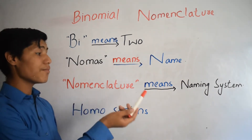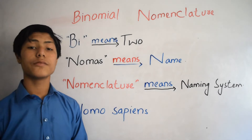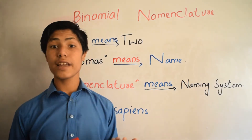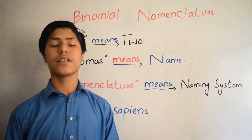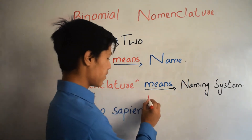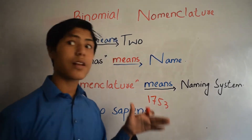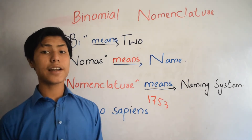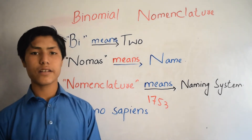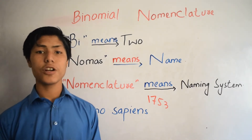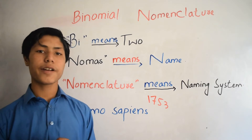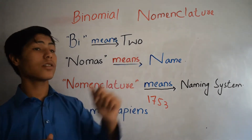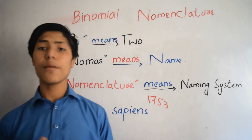Nomenclature means naming system. Binomial nomenclature was introduced by a swift botanist whose name was Carlos Linius in 1753. According to Carlos Linius, each organism — basically plant or animal — has two names: one is per genus and the second one is per species. This system is called binomial nomenclature.